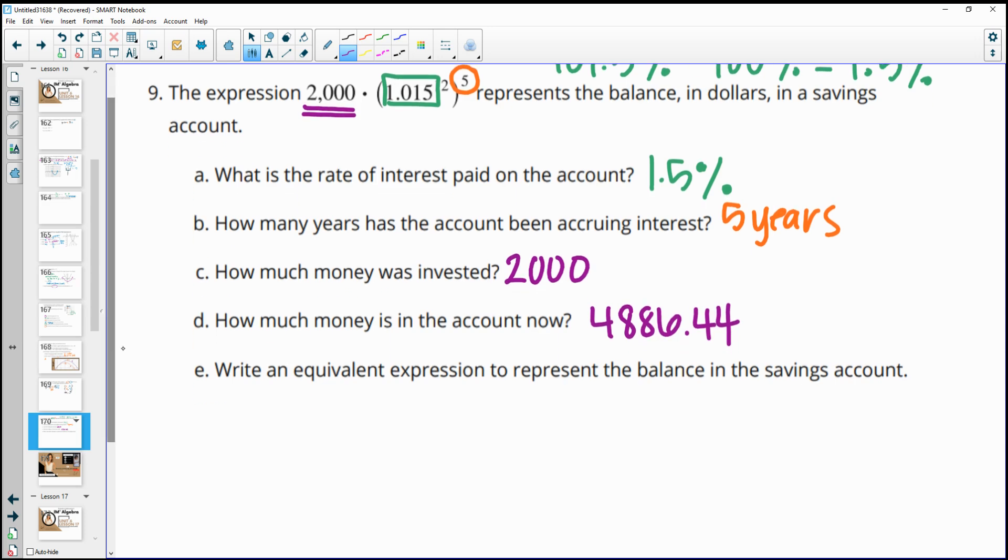And then it wants us to write an equivalent expression to this. And so you could do this in a few different ways. But what I'm going to do is just multiply these together. So we've got 2,000 times 1.015 to the 60th power, because I'm just going to take and do 12 times 5, which is 12 months for five years, is 60 times that we're getting our interest given to us.